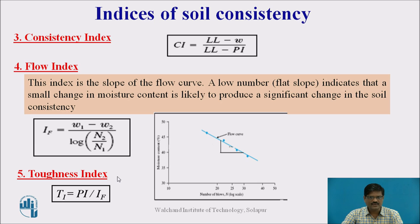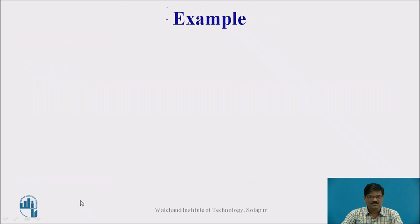The toughness index describes the toughness of the soil and is given by the equation: PI divided by IF — that is, plasticity index divided by flow index. All these indices basically give us the state of consistency and behavior of the soil.